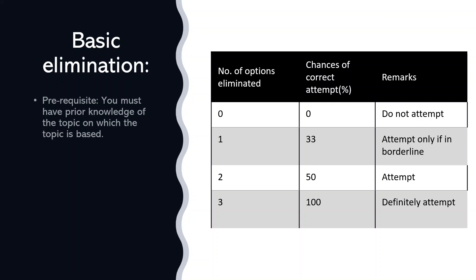If you are successfully able to eliminate one option, there is a 33% chance you will get it right. Attempt these types of questions only if you feel you are not able to cross the borderline — for example, if in geology you have only attempted 40 out of 120 questions and need at least 20 more, then definitely take the chance. If you can eliminate two options successfully, there is a 50% chance the answer will be correct, and these questions should be attempted by all means — don't leave them fearing negative marks. Remember, use these techniques only after attempting questions where you are confident.